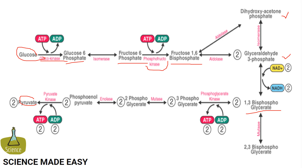In the seventh step, the phosphate is transferred from 1,3-bisphosphoglycerate to ADP to form ATP. Thus, two molecules of 3-phosphoglycerate and ATP are obtained at the end of this reaction.